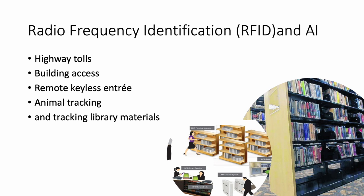Radio frequency identification has been used in a wide variety of applications, such as highway toll collection, building access control, animal tracking, and remote keyless entry for automobiles. For most libraries, we use it for tracking library materials. There's an RFID tag which has a microchip mounted onto an antenna and built into a self-adhesive label, which is then put on the back of the book. The antenna transmits information from the microchip to the RFID reader using a standard protocol, and most libraries use this for material control as well as inventory.